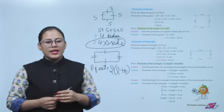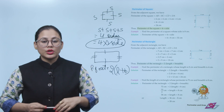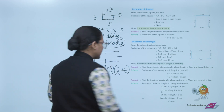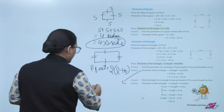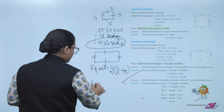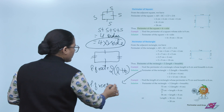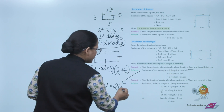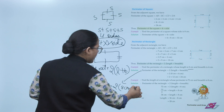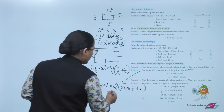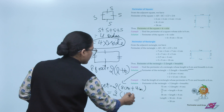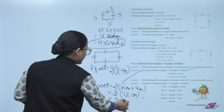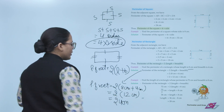Example: Find the perimeter of a rectangle whose length is 8 centimeters and breadth is 4 centimeters. Perimeter of rectangle = 2 × (length + breadth) = 2 × (8 + 4) = 2 × 12 = 24 centimeters.